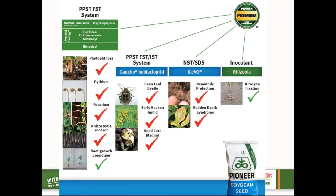Just like with corn, fungicidal seed treatments in soybeans can also be a great way to reduce our risk and protect our stands when seedling diseases show what they can do. Phytophthora, Pythium, Fusarium, and Rhizoctonia are the four most common seedling diseases within soybeans, and we have seed treatments that help protect against all four of these pathogens. One newer seed treatment within the Pioneer PPST seed treatment lineup is called Lumicina.